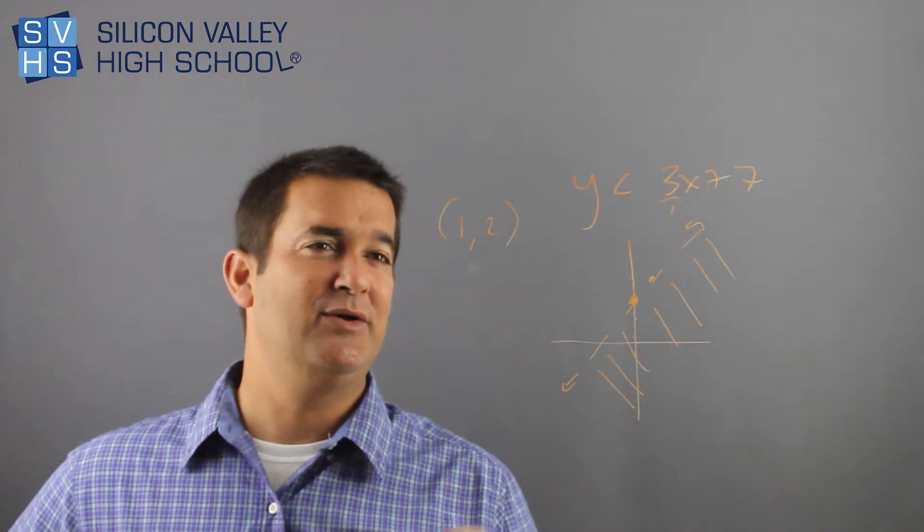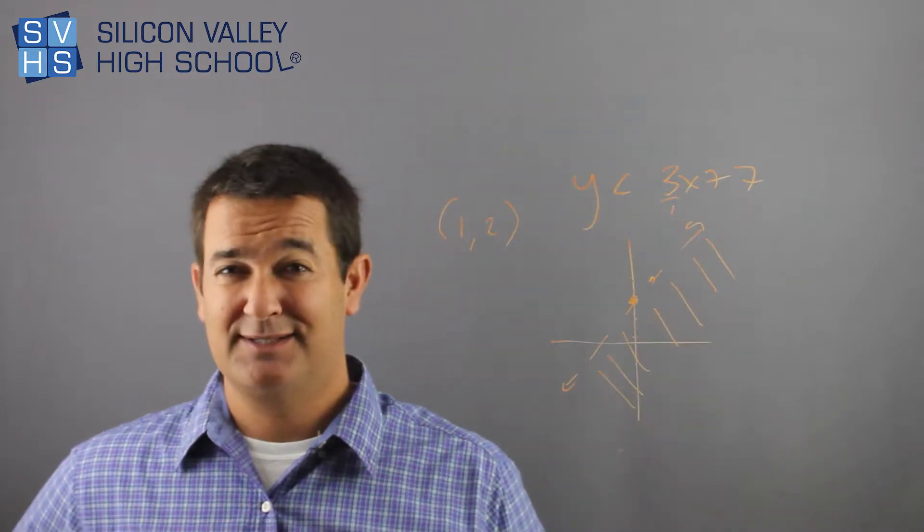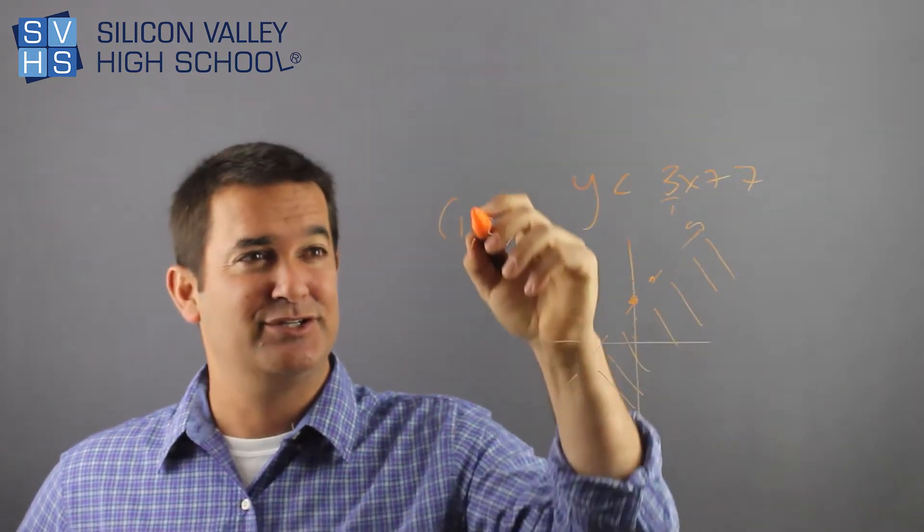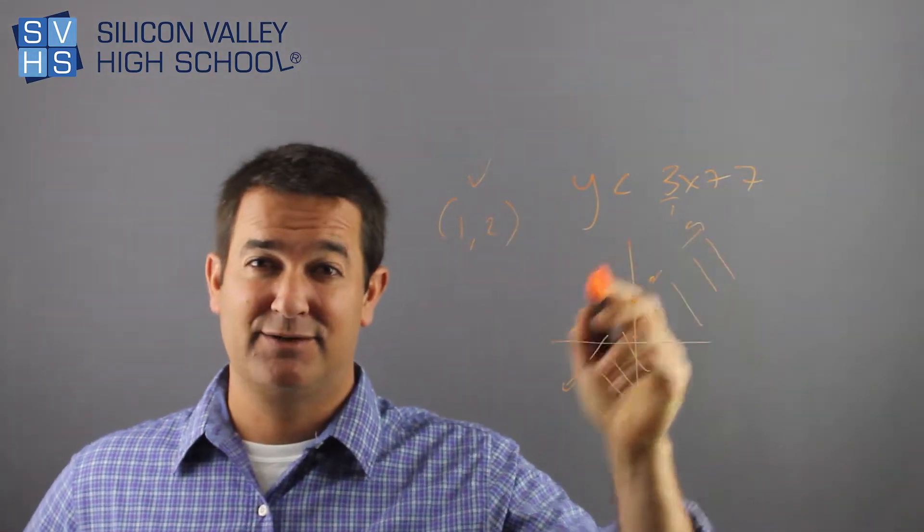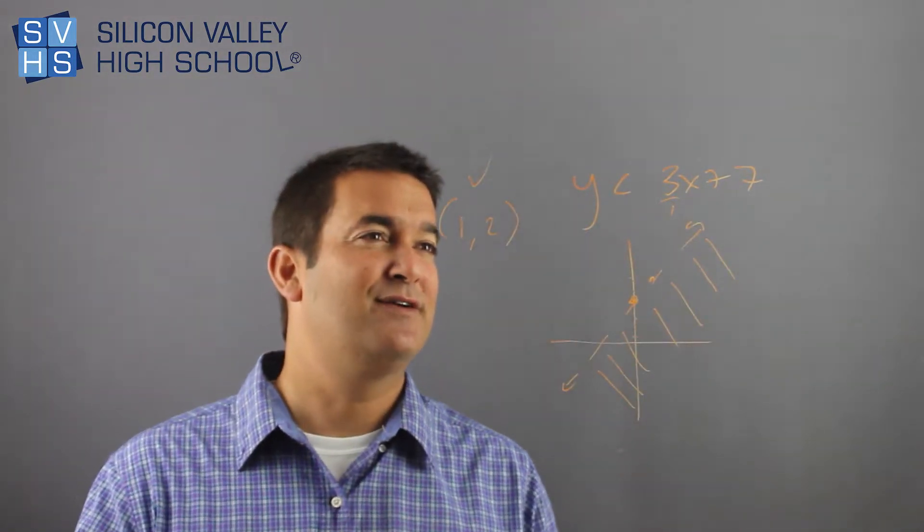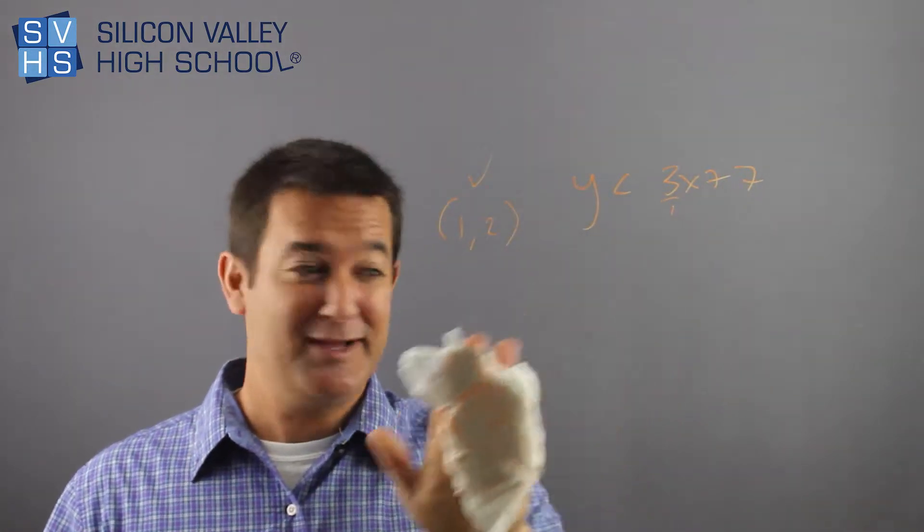And there's two ways to do it. You could either look on the graph and say, I don't know, go over 1, up 2. It definitely looks like it's in the shaded region, so this does check out as a point that is a solution to this graph. The other way to do it is to forget the graph and just plug it in and see if it makes a true statement. That's the wise way to do it.